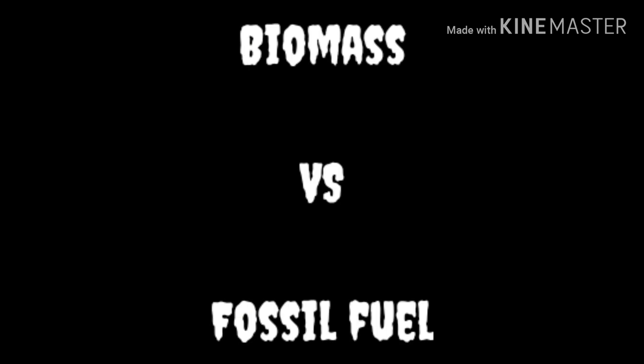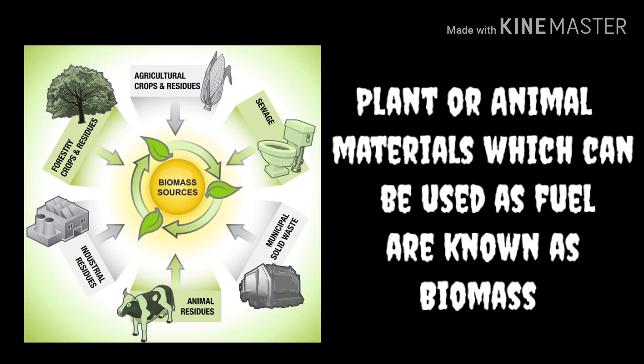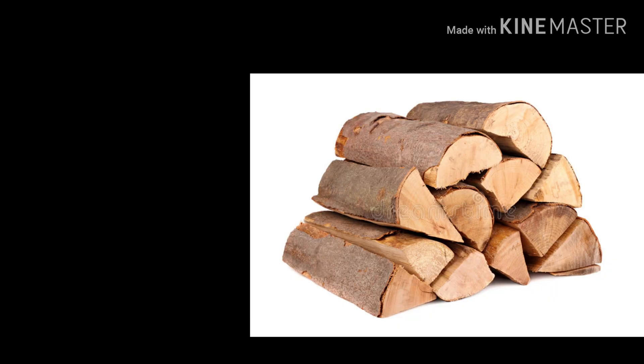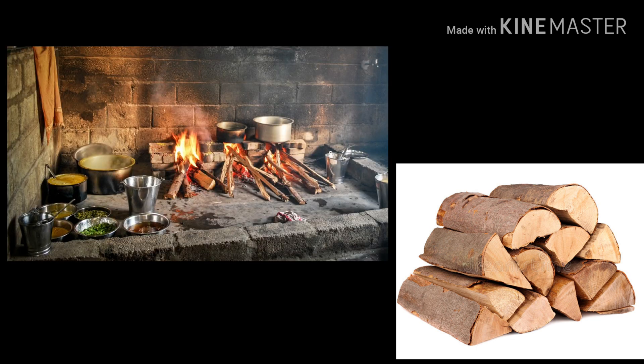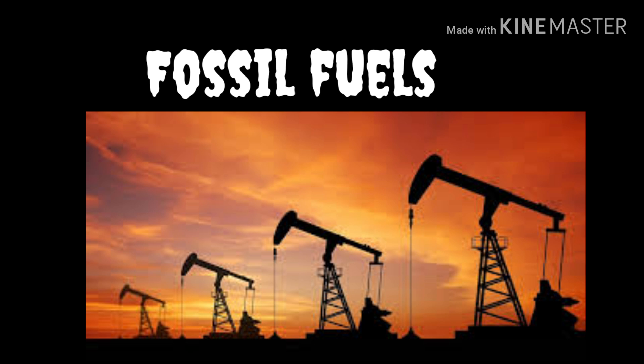If they both originate from the same source, what makes them different? Biomass is plant or animal material which can be used as fuel — we immediately or instantly use the organic material as the energy source. For example, you find a big trunk of a tree, cut it into pieces, and use it as firewood. Here you instantly use that wood to generate energy. This is considered as biomass.